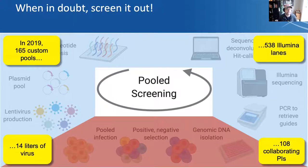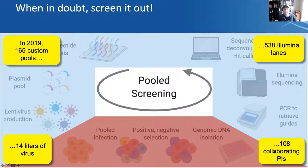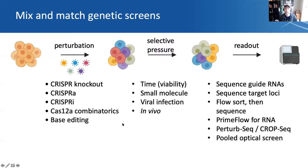In 2019 we did an awful lot of these screens, and an awful lot in 2020 as well, though a little bit less due to the pandemic. We made over 150 customized pools, 14 liters of lentivirus, an awful lot of illumina lanes, and collaborated with well over 100 PIs both at the Broad and in the broader scientific community. But what I'm going to talk about today is work where we did the parts in red, to develop base editors for pooled screening.